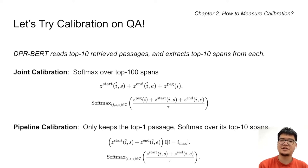In joint calibration, we sum the passage selection, span start, and span end logits, and then divide the sum by the temperature scalar, and then softmax over the top 100 answer spans to get the probabilistic confidence scores. In pipeline calibration, we first choose the top 1 passage based on the passage selection logit, and then sum the span start and end logits for each of the answer spans in this passage, and then we perform temperature scaling.